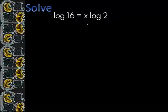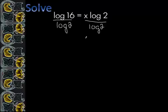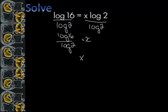For this one we want to get x by itself, so we're simply going to divide by log of 2. So x is log of 16 over log of 2. Now this isn't the log of 8 — it doesn't work like that. When you put it into your calculator it turns out that we have 4, so x equals 4.